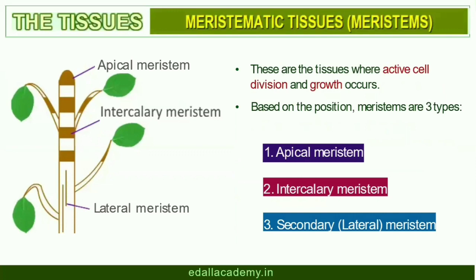Meristematic Tissues. Growth in plants is largely restricted to specialized regions of active cell division called meristems, from the Greek word 'meristos' meaning divided. The meristems which occur at the tips of roots and shoots and produce primary tissues are called apical meristems.